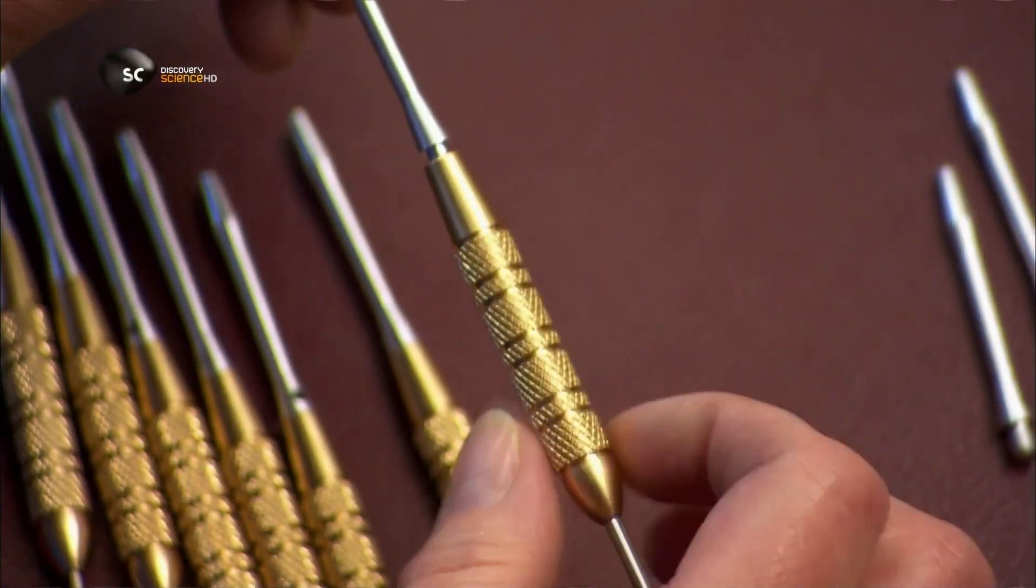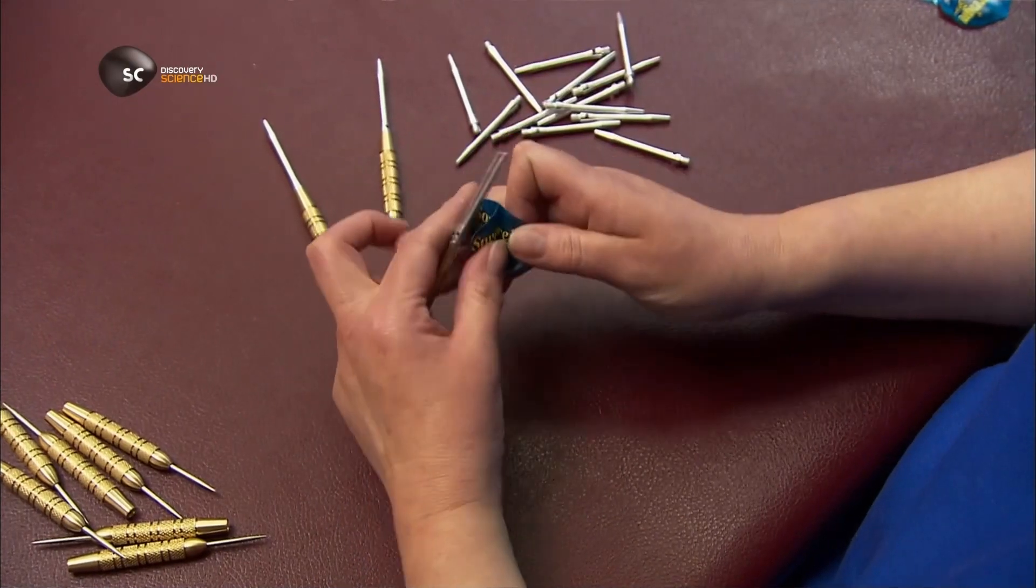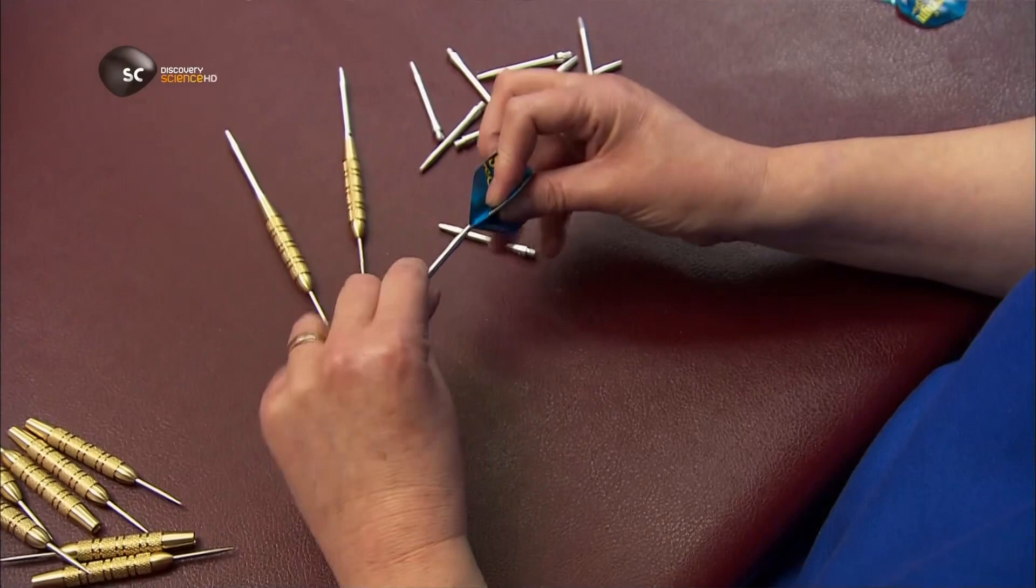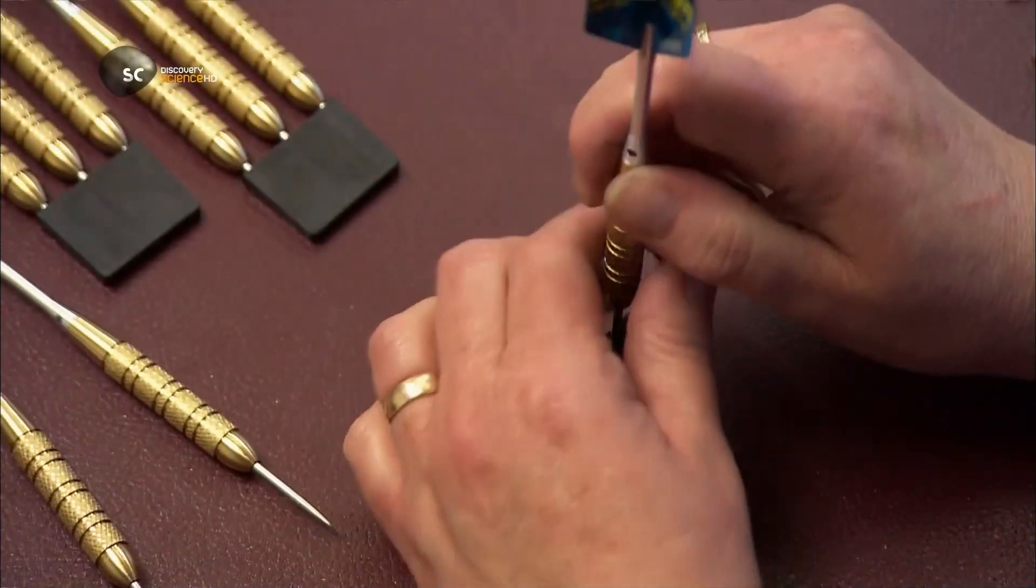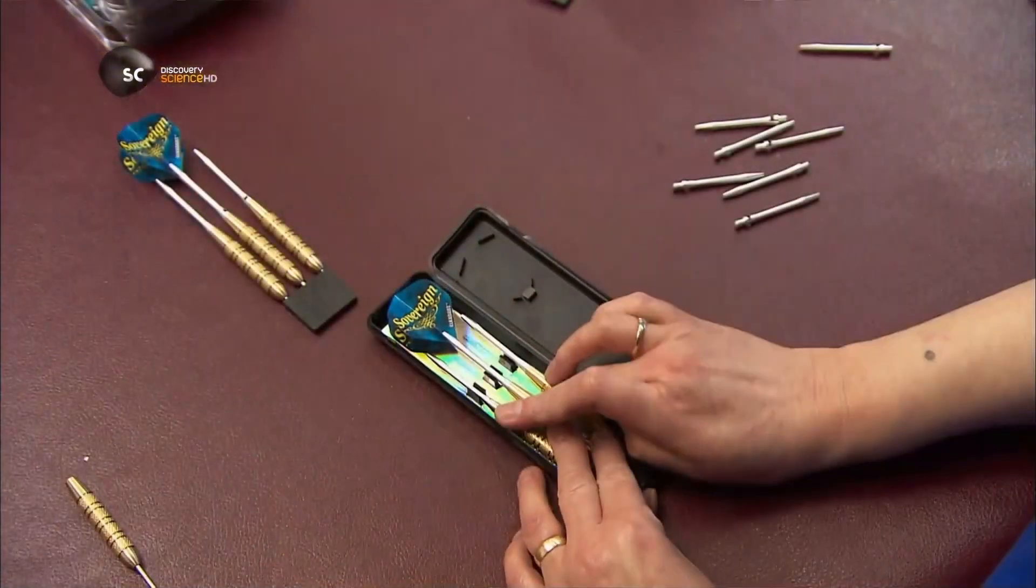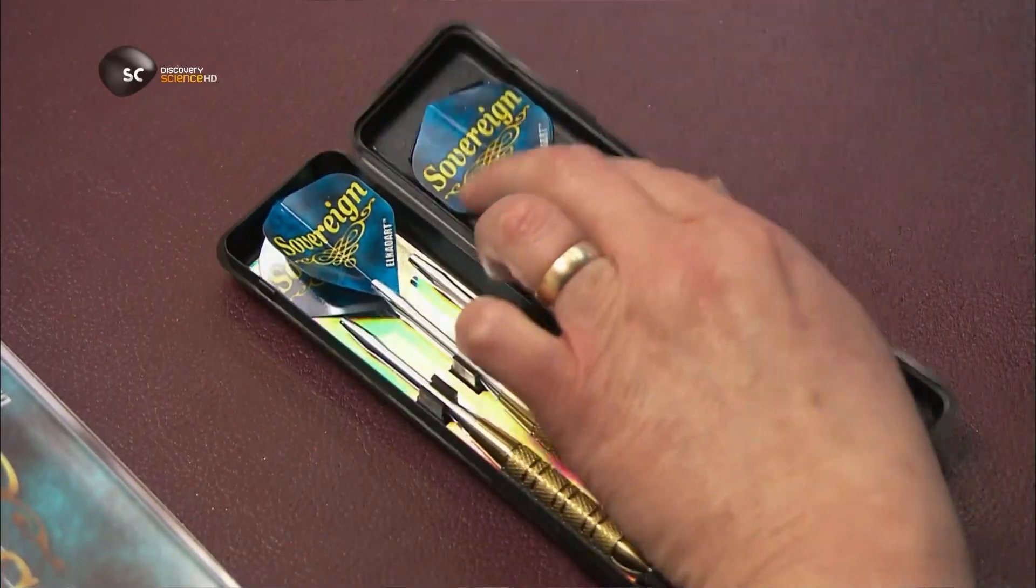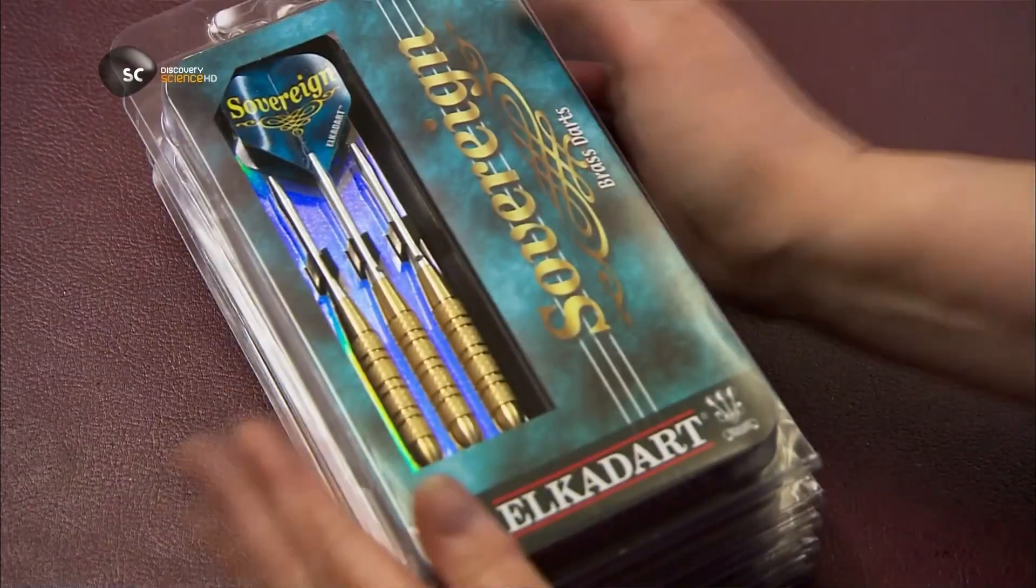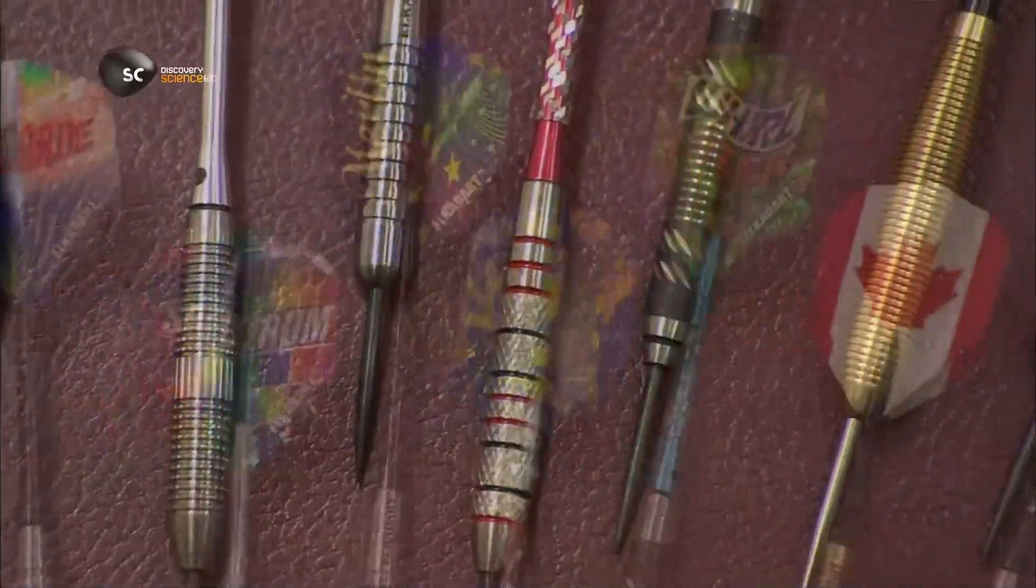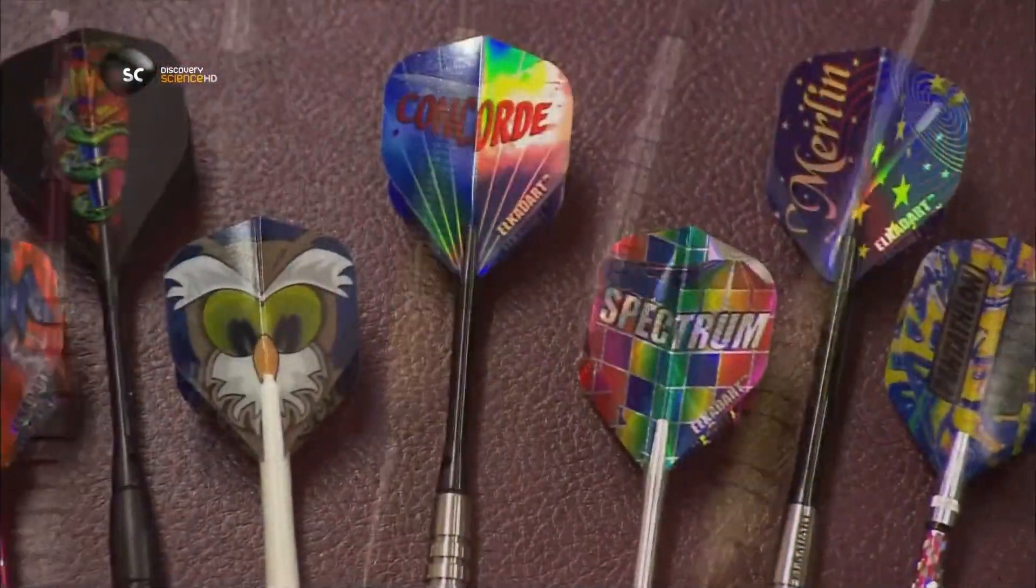Now it's time to screw the shaft to the barrel of the dart. They slide the polyester flight into cross slots on the end of the shaft. And this set of darts is now ready for its target market. It takes less than a minute to make a dart. But it can take a lifetime to find the bullseye, especially if you play like me.